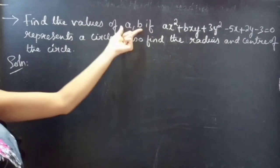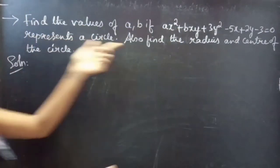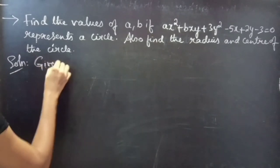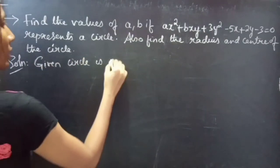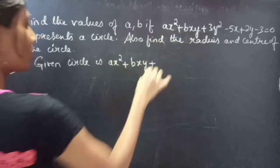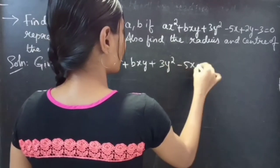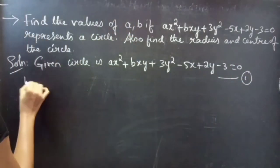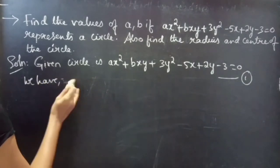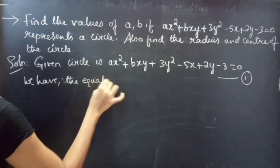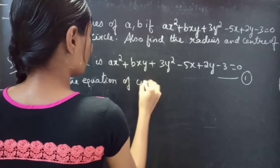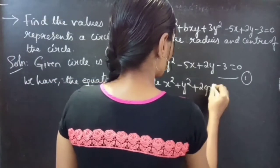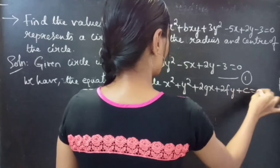So we are asked to find the values of A and B if this represents a circle, and also we are asked to find the radius and center of this circle. The given circle equation is A x squared plus B x y plus 3 y squared minus 5 x plus 2 y minus 3 equals 0 — let's call it equation 1. We also have the standard equation of a circle: x squared plus y squared plus 2gx plus 2fy plus c equals 0, which we call equation 2.